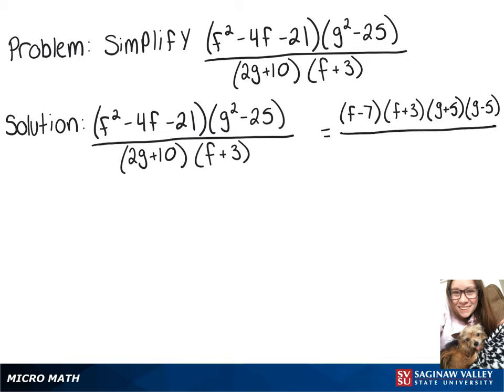On the bottom, with that 2g plus 10, we can factor out a 2, so we'll have 2 times g plus 5 times f plus 3.